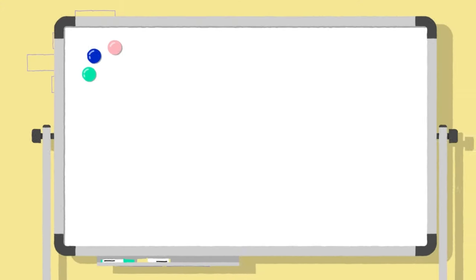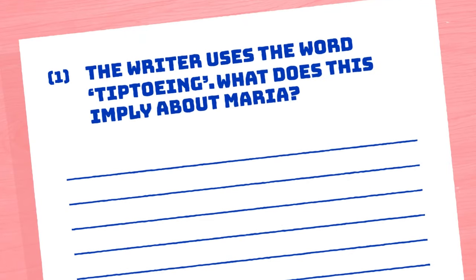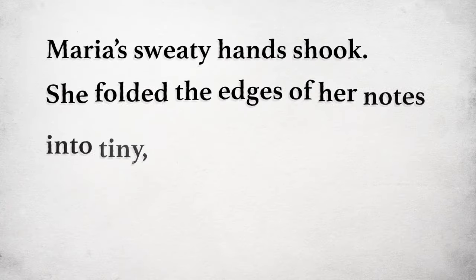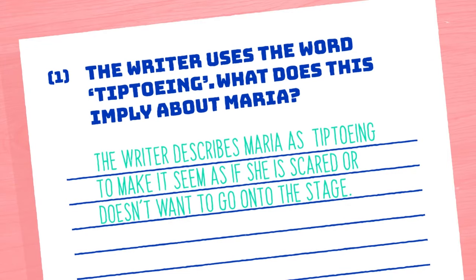Sometimes for a question like this, you might be asked about one specific word and what it implies. 'Implies' just means implicit — so hinted information. For example: the writer uses the word 'tiptoeing' — what does this imply about Maria? I would start by rereading the sentence, then switch it out with a synonym to see how it changes the meaning. For example, 'she skipped towards the stage' sounds like she was happy or excited to be on stage — very different to tiptoeing. That's normally something you do when you're scared, trying to hide or go unnoticed. So that's my answer: the writer describes Maria as tiptoeing to make it seem as if she's scared or doesn't want to go onto the stage.